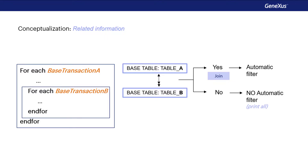Of course, the developer can always add explicit filter conditions by typing them directly in the foreach command with where clauses. In these cases, we assumed that the tables were different. In the following video, we will see what happens when the tables of the external and nested foreach commands are the same table.